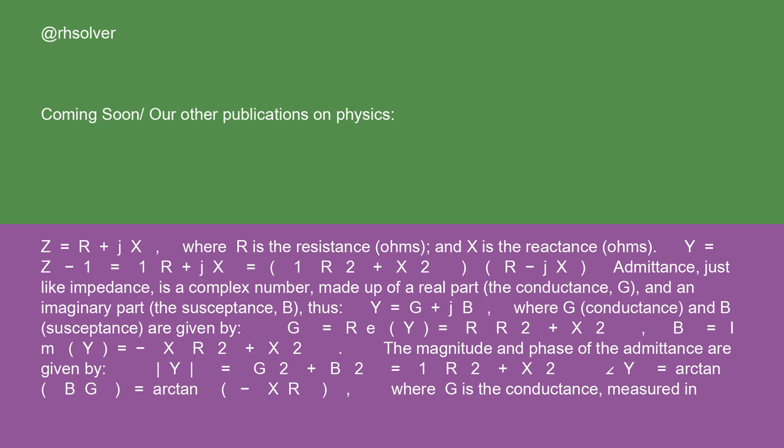Thus, Y equals G plus jB, where G, conductance, and B, susceptance, are given by: